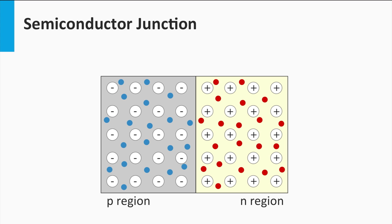Now we first consider the situation that this p-n junction is in the dark and is in thermal equilibrium. What will happen? How will the charge carriers be distributed over the p-region and the n-region? On the left we have a majority of holes. On the right we have a majority of electrons. As we can obviously see, the p-n junction has an enormous density gradient close to the interface between the p- and n-region. The hole density is much lower in the n-region than in the p-region, whereas the electron density is much lower in the p-region than in the n-region.